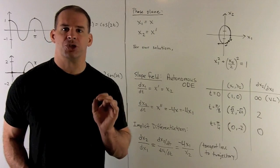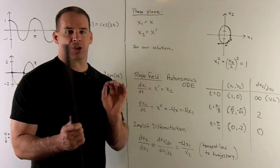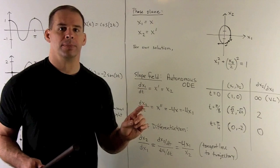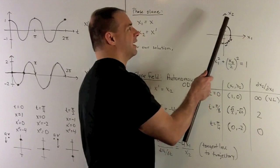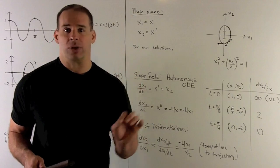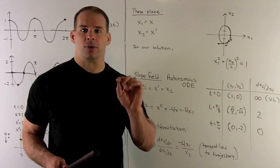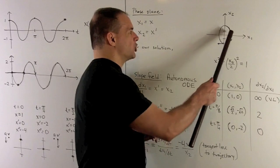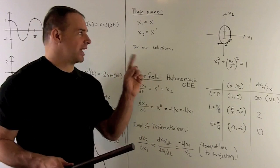Taking the solution and plotting it as a trajectory in the phase plane: we set x1 equal to X and x2 equal to X prime, then plot the curve in the x1-x2 plane. Physically, x1 is height and x2 is velocity, so we see how position and velocity evolve together. In our special case, we had x1 squared plus (x2 over 2) squared equals 1 — so our trajectory is an ellipse.